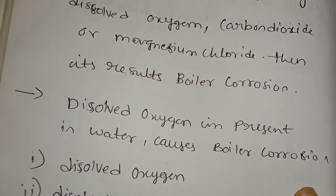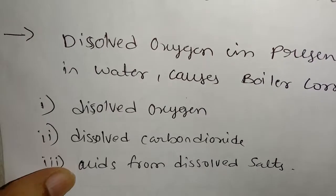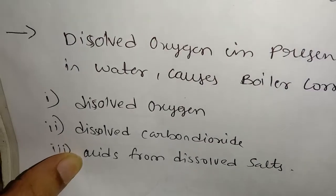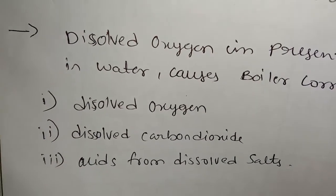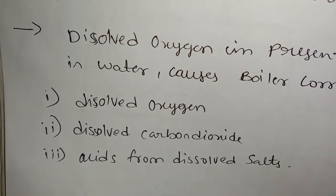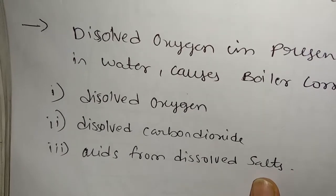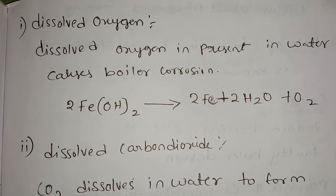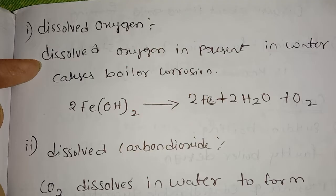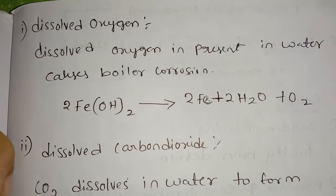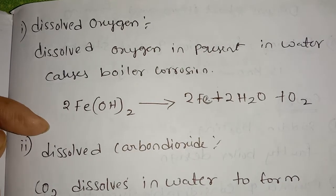We have dissolved oxygen, dissolved carbon dioxide, and acid from dissolved salts. We will try to remove or prevent these. The first one is dissolved oxygen. Dissolved oxygen is present in water and causes boiler corrosion.